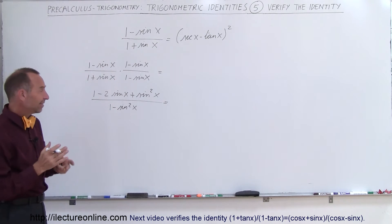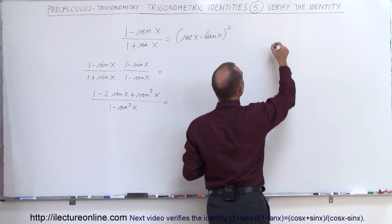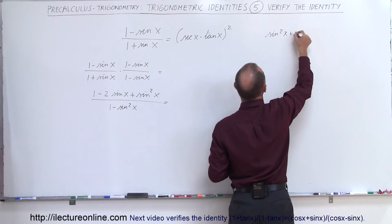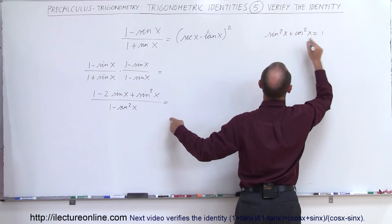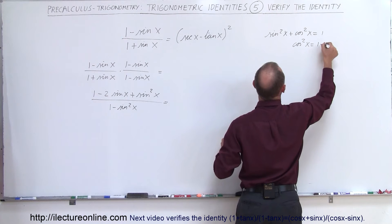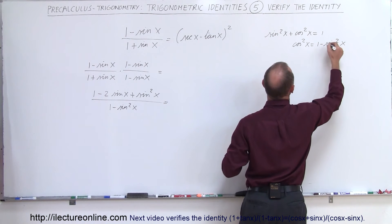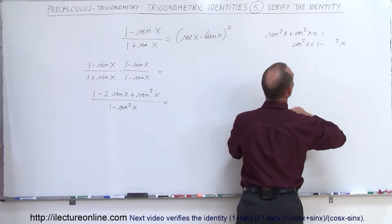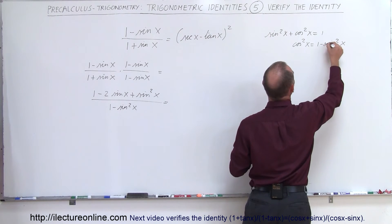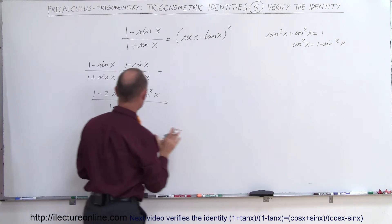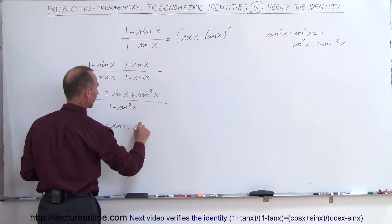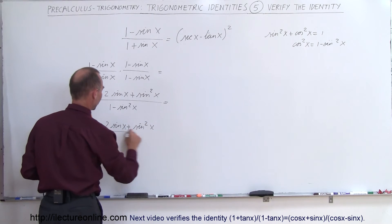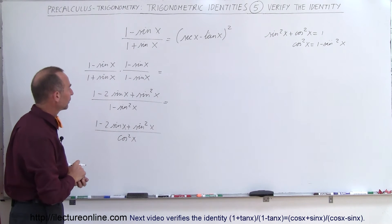Now, 1 minus the sine square of x, that's equals to the cosine square of x. Remember this identity, that the sine square of x plus the cosine square of x equals 1. So if we then move the sine to the other side, we say that the cosine square of x equals 1 minus the sine square of x. Doesn't look very good, but let me rewrite that. So it looks a little better. So we can then replace that by 1 minus 2 times the sine of x plus the sine square of x, all divided by the cosine square of x.